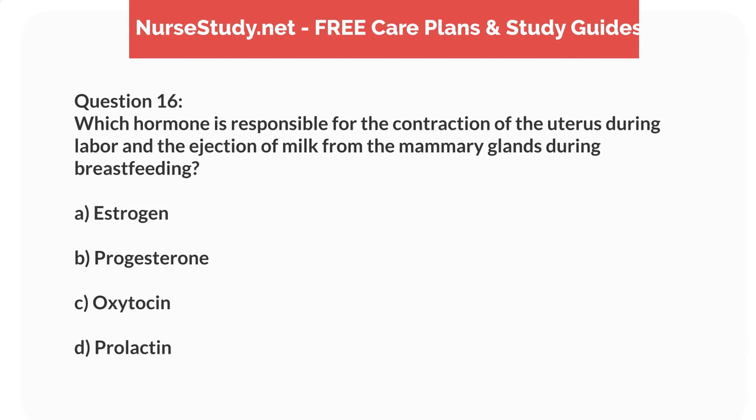Question 16. Which hormone is responsible for the contraction of the uterus during labor and the ejection of milk from the mammary glands during breastfeeding? A. Estrogen. B. Progesterone. C. Oxytocin. D. Prolactin.